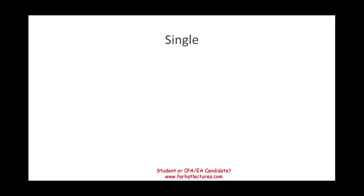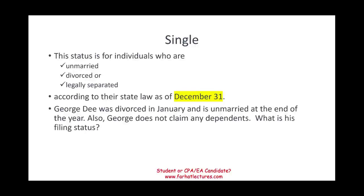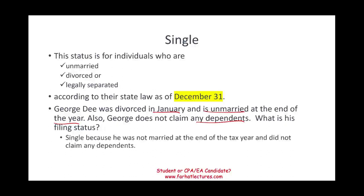Starting with single — this status is available for people who are unmarried, divorced, or legally separated as of December 31st of that year according to their state law. For example, if George was divorced in January and is unmarried at the end of the year with no dependents, his filing status is single.